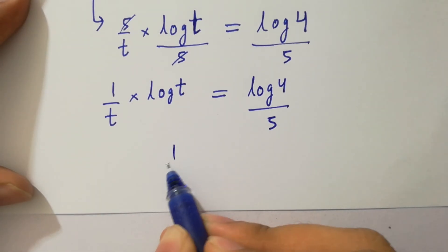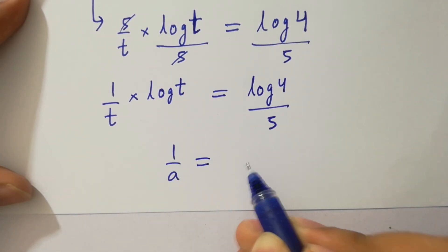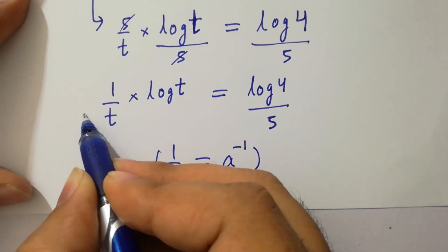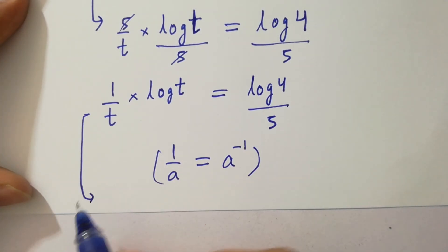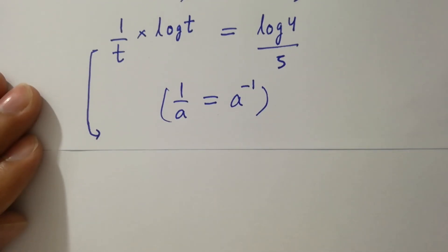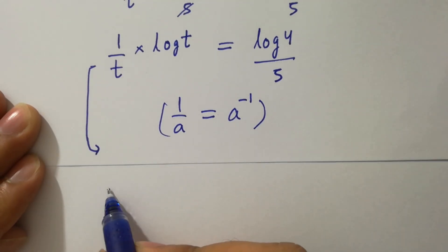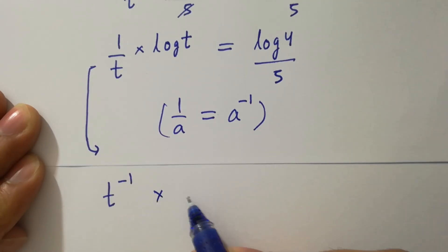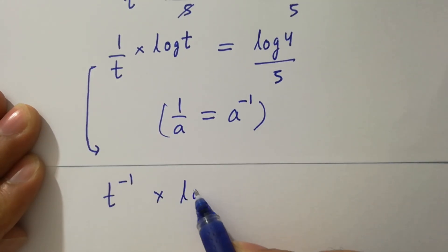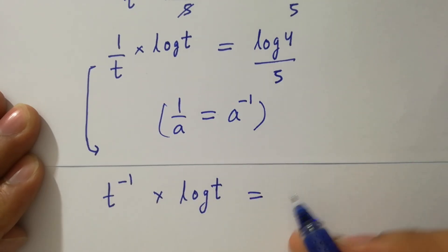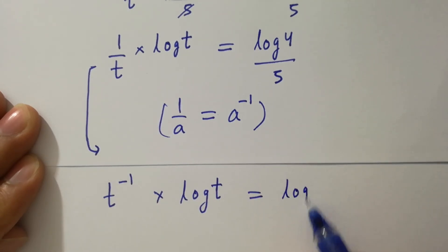Using the rule 1 over a equals a to the power minus 1, we can rewrite this as t to the power minus 1 times log t equals log 4 over 5.